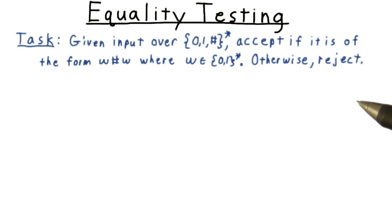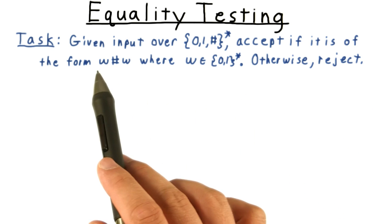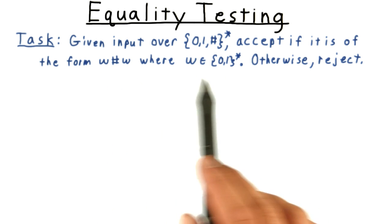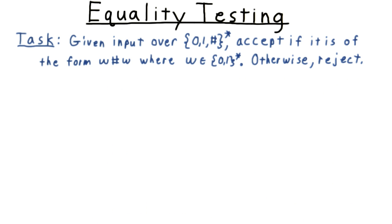To illustrate some of the key challenges in computing with Turing machines and how to overcome them, we'll examine this task here, where we're given an input string and we want to tell if it is of the form w hash w, where w is a binary string, otherwise we reject it.